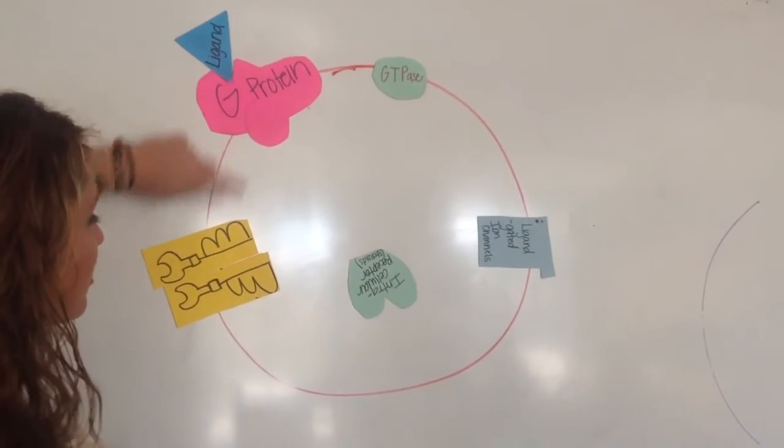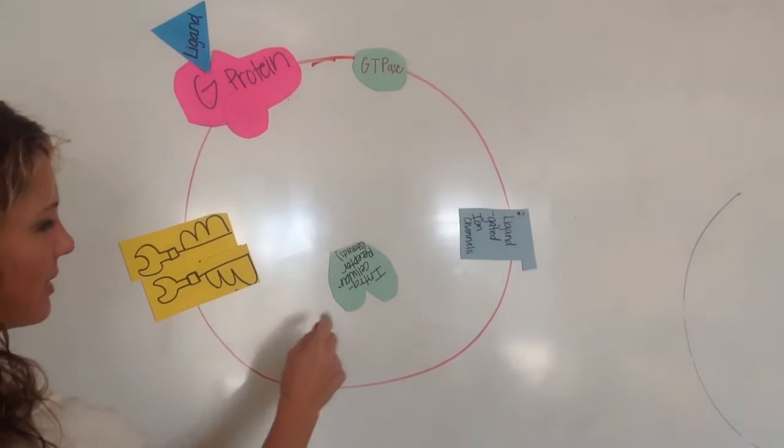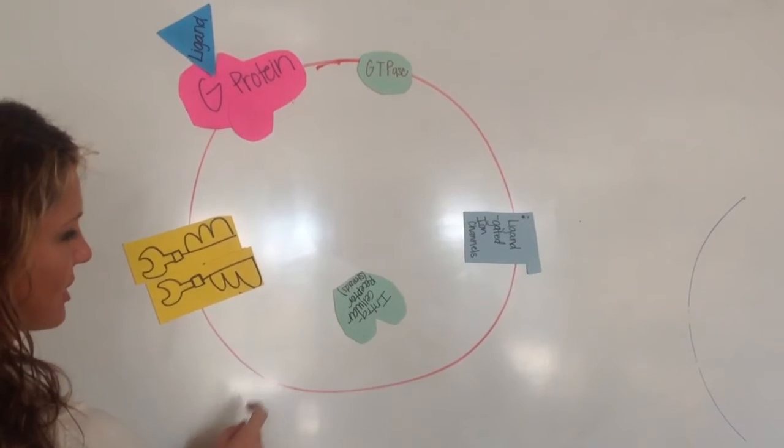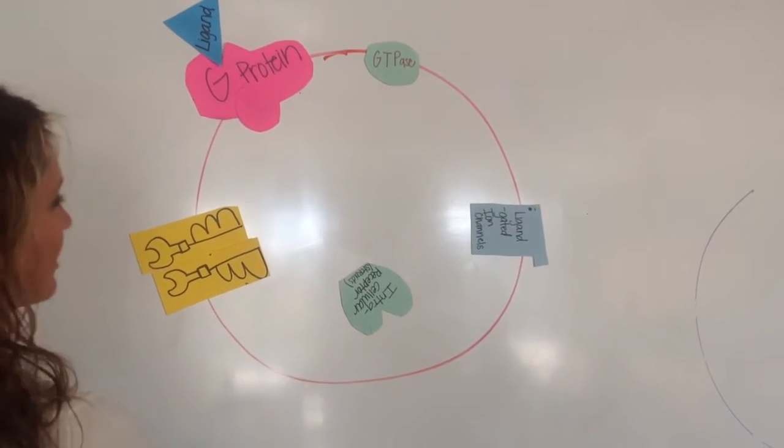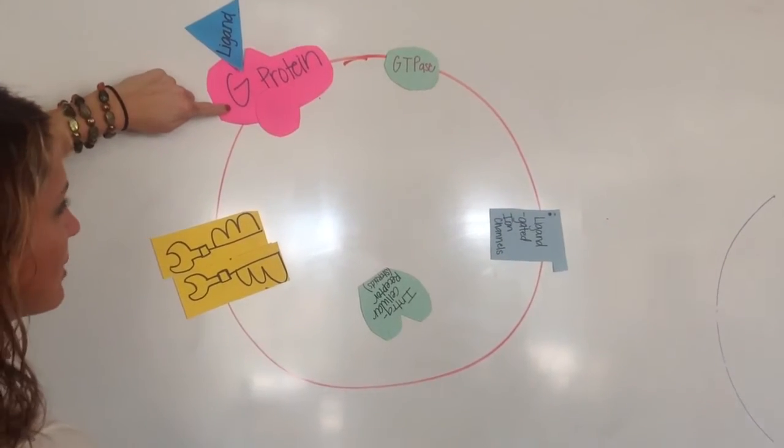There's three types of protein receptors inside the cell membrane that we're going to talk about. And there's one type of receptor that's actually inside the cytoplasm or inside the cytosol. So the first one is the most common, and it's G-protein.